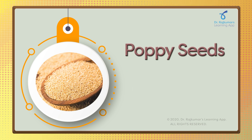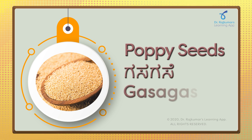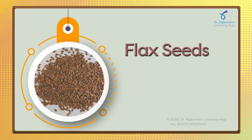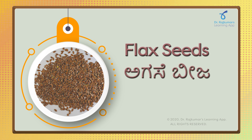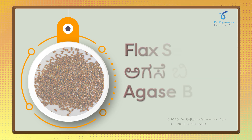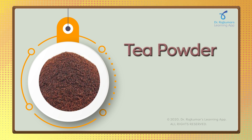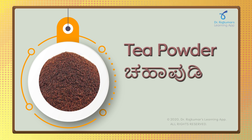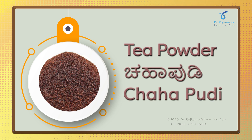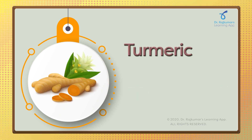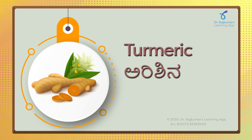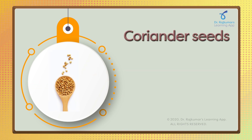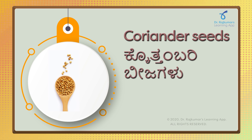Poppy seeds — Gusase. Flax seeds — Agase beeja. Tea powder — Chaha pudhi. Turmeric — Arishina. Coriander seeds — Kothambari.